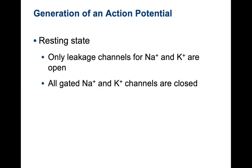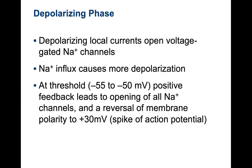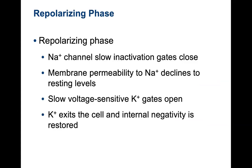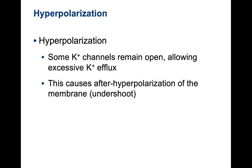During resting state, only leakage channels for sodium and potassium are open; all gated sodium and potassium channels are closed. During the depolarization phase, depolarizing local currents open voltage-gated sodium channels. Sodium influx causes more depolarization and at threshold, positive feedback leads to opening of all sodium channels and a reversal of membrane potential to plus 30 — this is your spike. As you start to repolarize, sodium channels close, membrane permeability to sodium declines to resting levels, slow voltage-gated potassium gates stay open, potassium exits the cell, and internal negativity is restored. The hyperpolarization state occurs when some potassium channels remain open, causing excess potassium efflux — an after-hyperpolarization or undershoot.